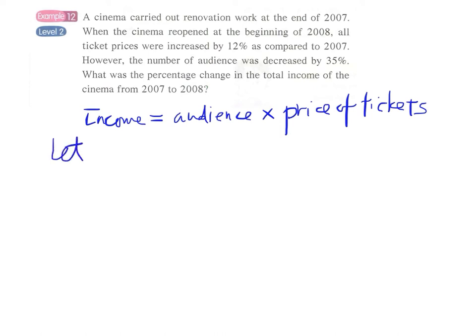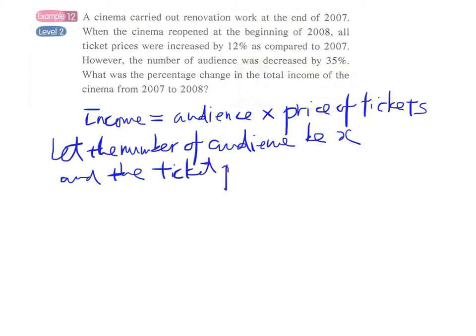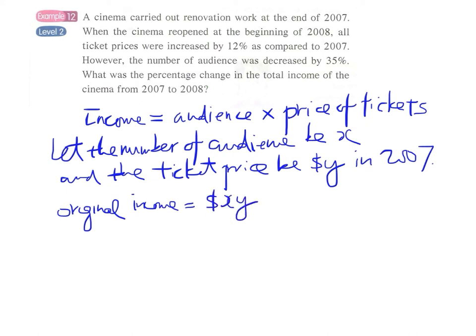Let the number of audience be x and the ticket price be y dollars in 2007. Therefore, the original income will be x times y.